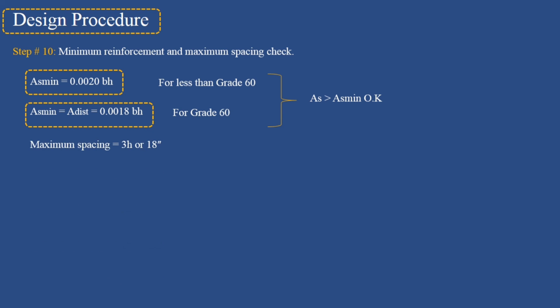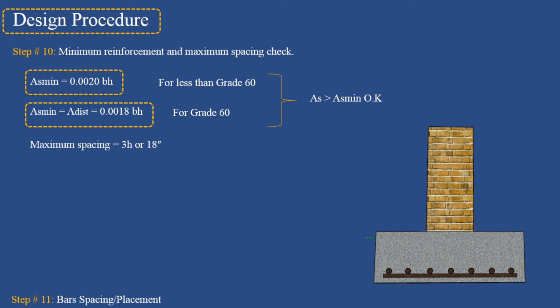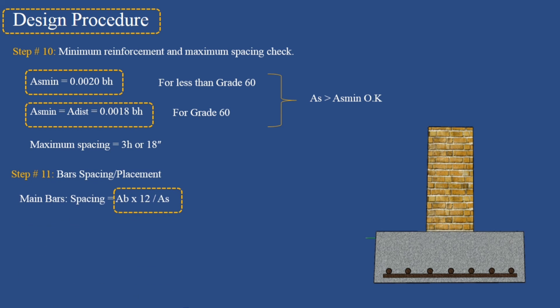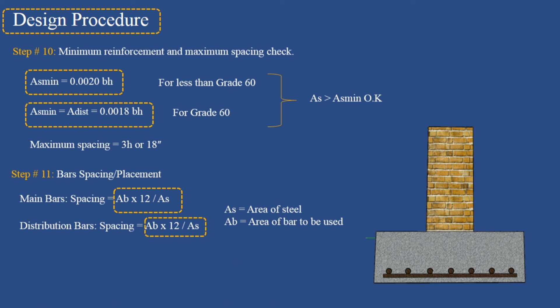Maximum spacing check equals 3 × h. Step 11: Bars spacing and placement — main bars spacing equals Ab × 12 divided by As; distribution bars spacing equals Ab × 12 divided by As, where As is the area of steel and Ab is the area of the bar to be used. Step 12 is drafting.